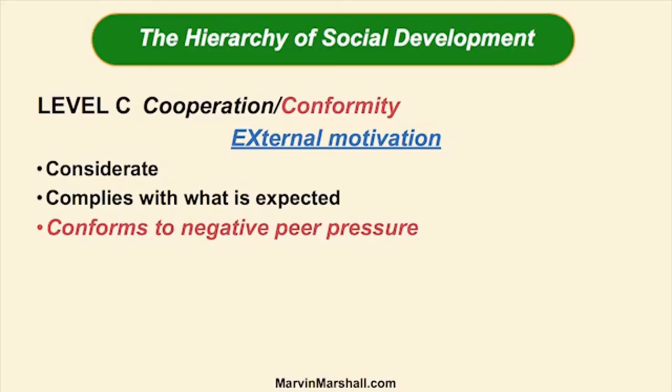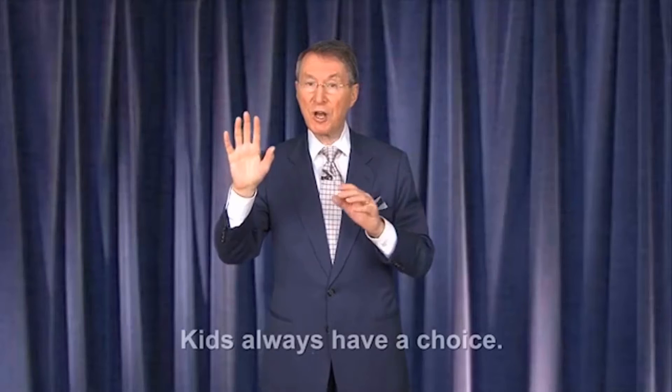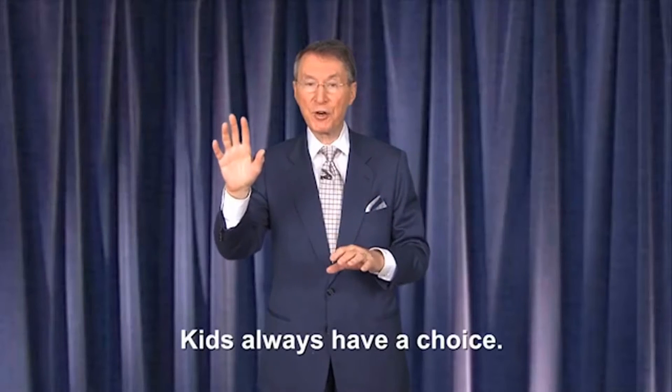In the hierarchy of social development, Level C has to do with motivation. There are two levels of motivation: Level C and Level D. It's important to understand kids always have a charge built into them. Inappropriate areas are Levels A and B; appropriate levels are C and D.